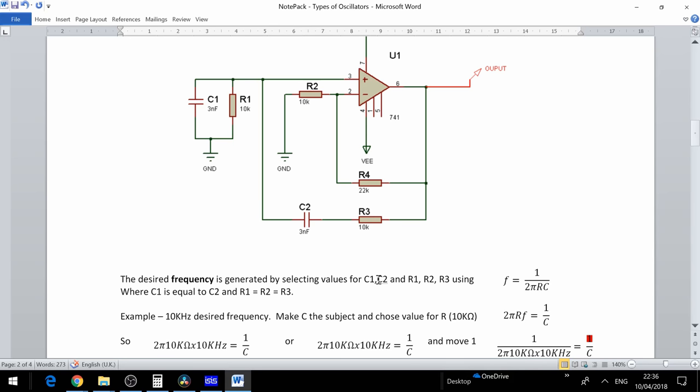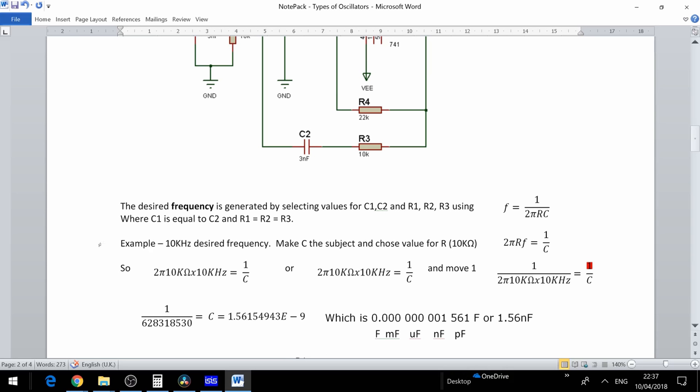We can set the desired frequency by selecting appropriate values for C1, C2 and R1, R2 and R3, using the formula F equals 1 over 2 pi RC, where C1 should be equal to C2, and R1 should be equal to R2 and R3. In this example we will look for a desired frequency of 10 kilohertz.